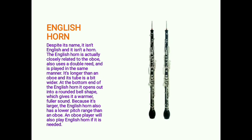The English horn — despite its name — is neither English nor a horn. It is closely related to the oboe, also uses a double reed, and is played in the same manner. It is longer than an oboe and its tube is a bit wider. The bottom end opens out into a rounded bell shape, which gives it a warmer, fuller sound. Because it is larger, the English horn has a lower pitch range than an oboe. An oboe player will also play English horn if it is needed.